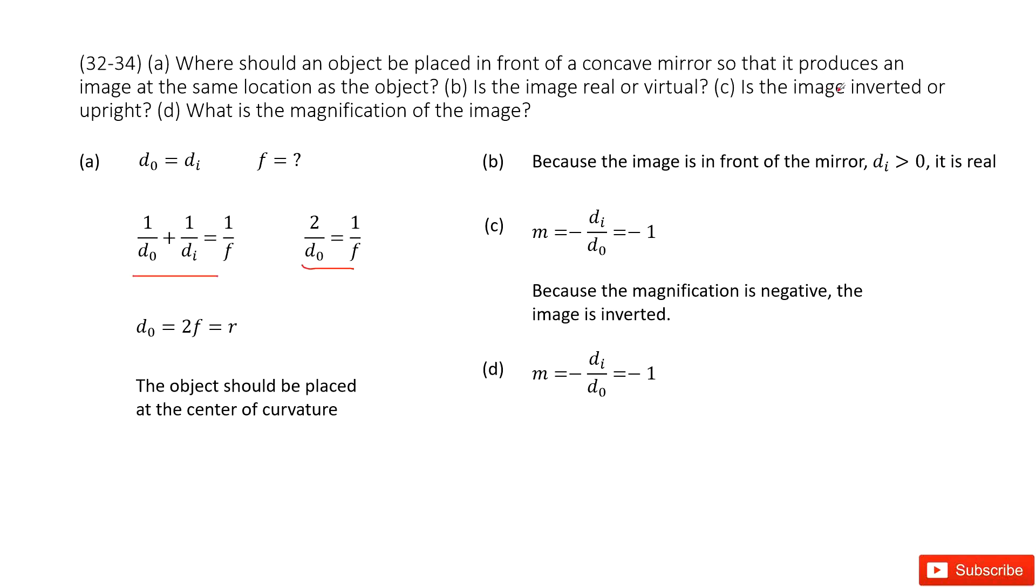Next one: is the image inverted or upright? We can do the calculation for the magnification. Magnification equals negative di over d0. Since di equals d0, it equals negative 1. The magnification is negative, so the image is inverted.